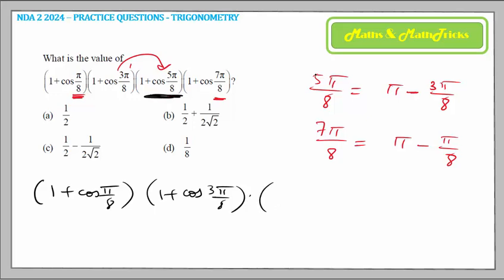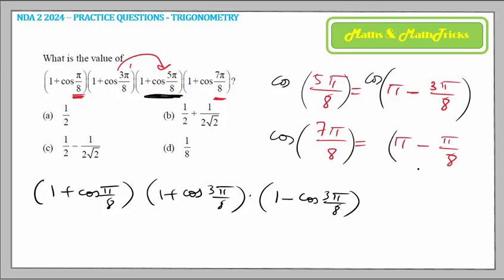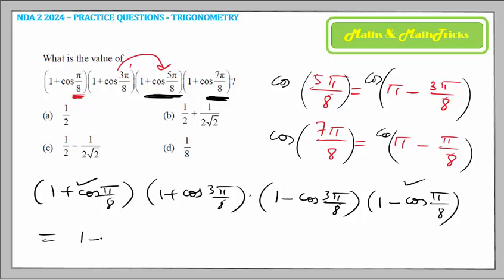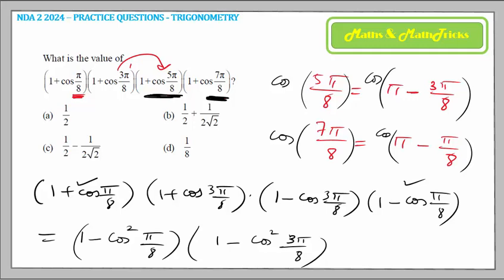Applying cos(π - θ) = -cos θ: cos(5π/8) = -cos(3π/8) and cos(7π/8) = -cos(π/8). So the third bracket becomes (1 - cos(3π/8)) and the fourth becomes (1 - cos(π/8)). Pairing first and last brackets gives (1 - cos²(π/8)) = sin²(π/8), wait — using (a+b)(a-b): (1 - cos²(π/8)) and similarly (1 - cos²(3π/8)). We now need to calculate each bracket.